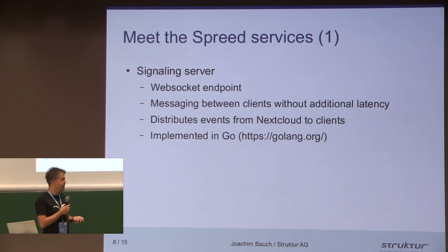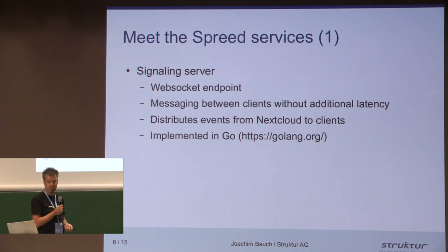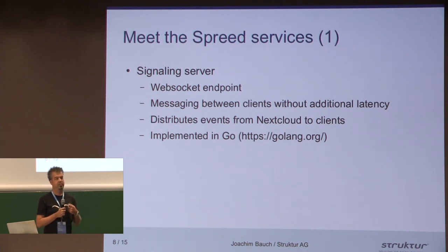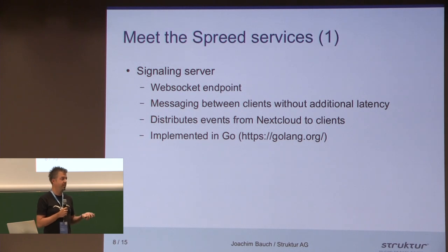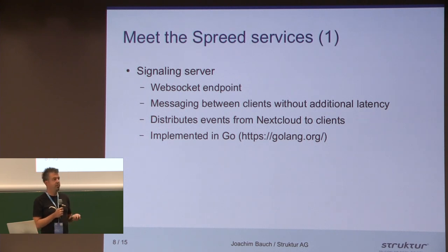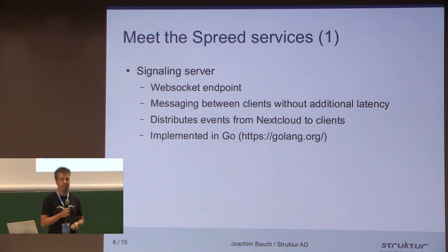With the speed services, we want to improve all of these things. First is the standalone signaling server. It's using WebSockets for communication, so there is no GET and POST involved. Messages can be sent directly, and there's no additional latency besides the actual network latency. Also, events from Nextcloud are distributed through that signaling server to the clients — for example, if a user is invited to a new room, he gets an event to refresh the room list. That signaling server is implemented in Go.